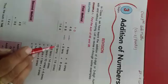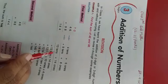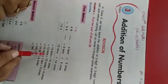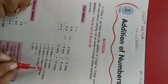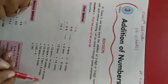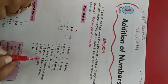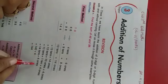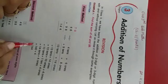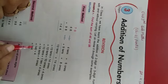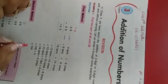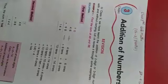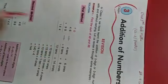Now we add the tens: 4 + 9 = 13 tens. So we have 13 tens + 14 ones, which equals 13 tens + 1 ten + 4 ones, which equals 14 tens + 4 ones. And 14 tens + 4 ones = 140 + 4 = 144.